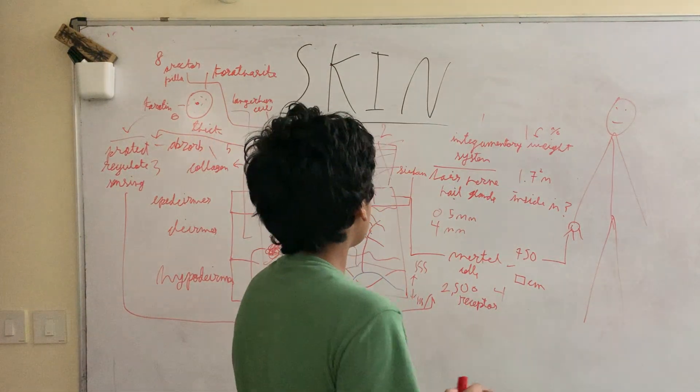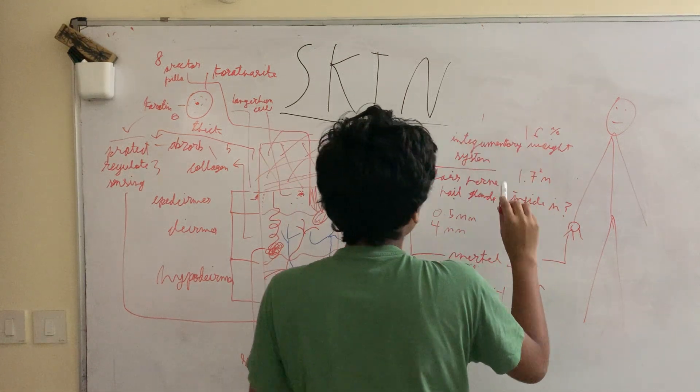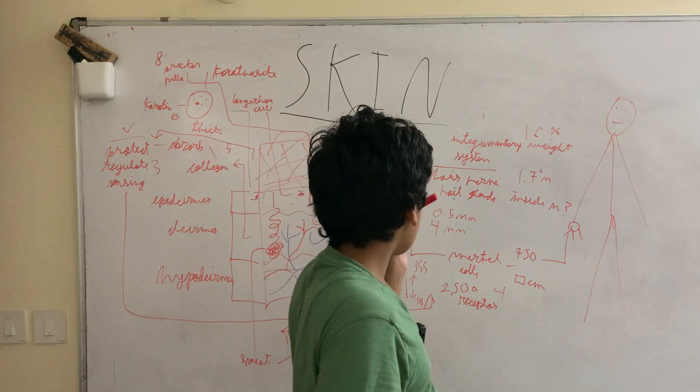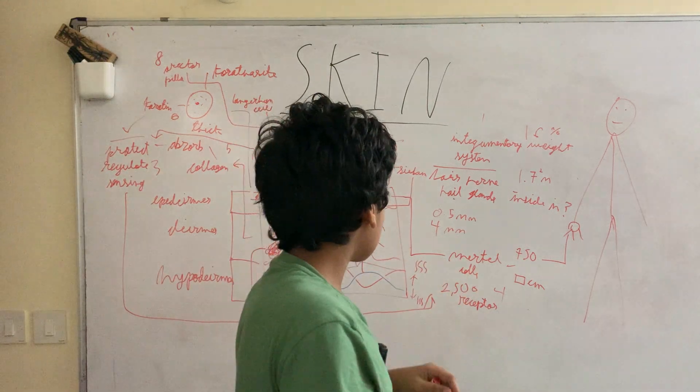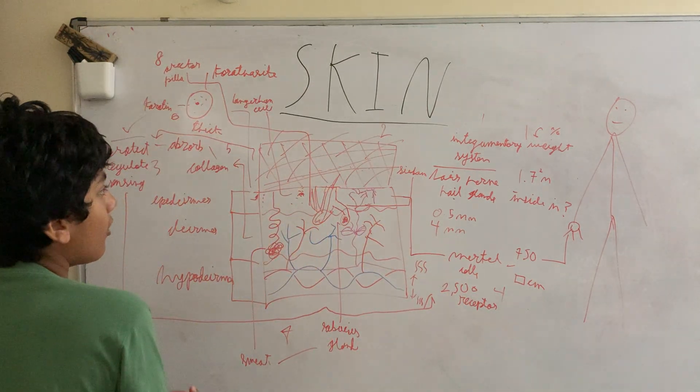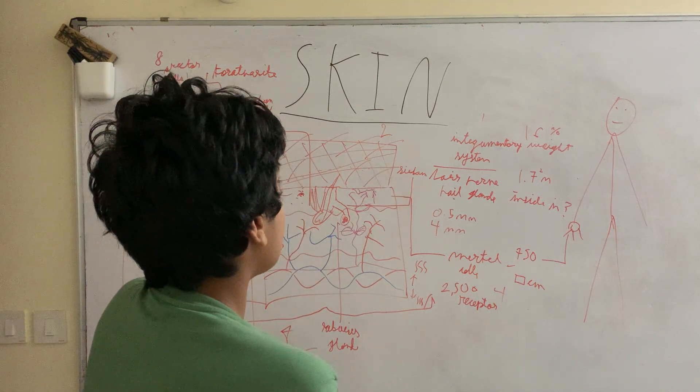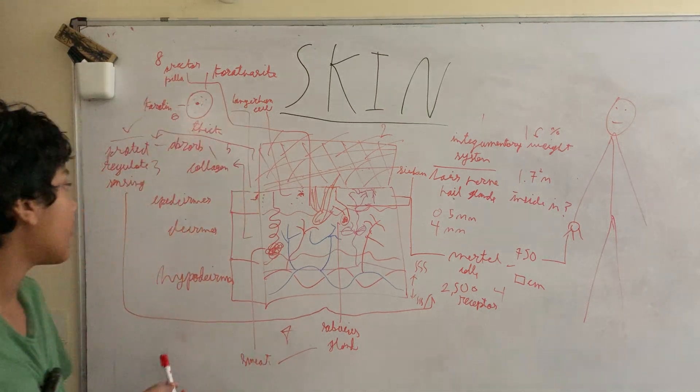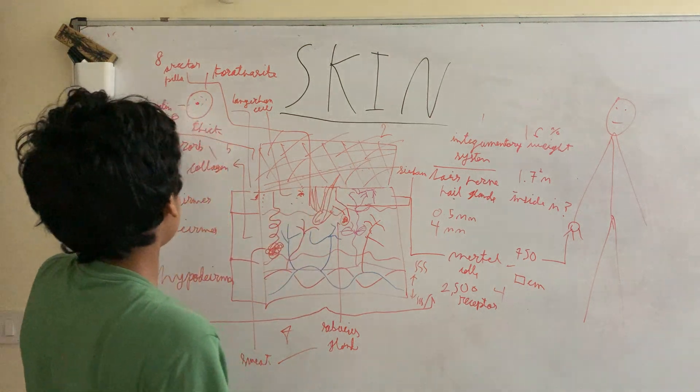Most people just think it's there to keep our insides in, but there's still so much more to that. Skin is a part of the integumentary system. The system is composed of hair, specialized nerves, nails, and glands. Look here we have the diagram.